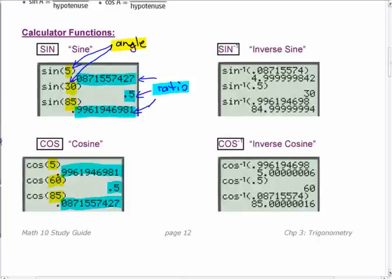The inverse buttons, how are they different? What are we putting in here? What's inside the brackets? When you do sine inverse of something, like right there, this is the ratio, right? That's the ratio. And it gives you the angle.